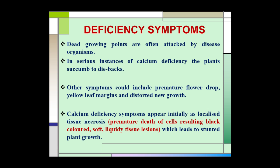Dead growing points are often attacked by disease organisms. In serious instances of calcium deficiency, the plants may die back. Other symptoms include premature flower drop, yellow leaf margins, and distorted new growth. Calcium deficiency symptoms appear initially as localized tissue necrosis — premature death of cells resulting in black-colored soft liquid tissue lesions — leading to stunted plant growth.